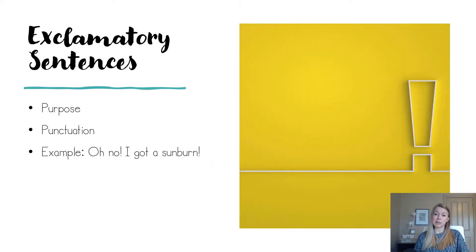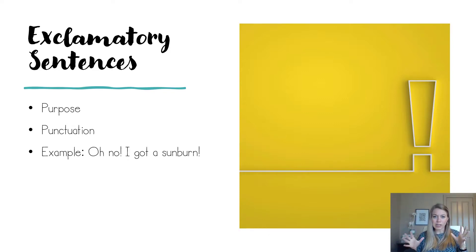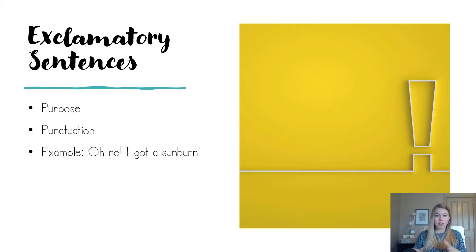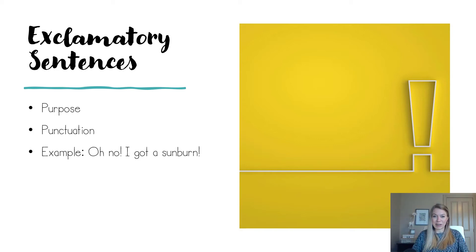Next up is exclamatory sentences. The purpose of an exclamatory sentence is to show a really strong emotion, which is why we end them with an exclamation point to show that strong emotion. For example: oh no, I got a sunburn! Lots of emotion there — maybe because it feels uncomfortable now on their shoulders.